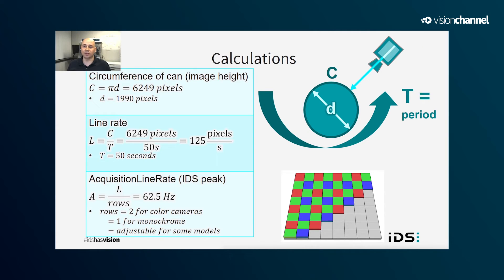For this application, I need the sensor capturing lines at approximately 125 pixels per second. When I go to set the acquisition line rate on the camera, I need to factor in the number of active rows on the sensor. Since I'm using a color sensor, I need two active rows to properly capture all three channels of color information — red, green, and blue. So when setting the acquisition line rate for this application, I need to set it to 62.5 Hz.